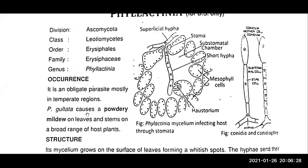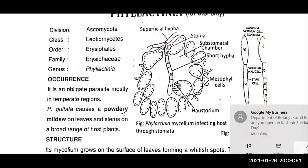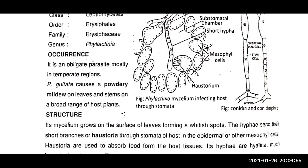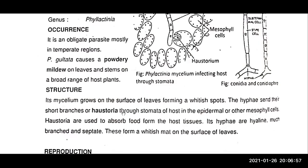Phylactinia guttata causes a powdery mildew on leaves and stems of a broad range of host plants. Generally, you will see the leaves covered with a wide white powder. The mycelium grows on the surface of the leaves, forming a whitish spot.